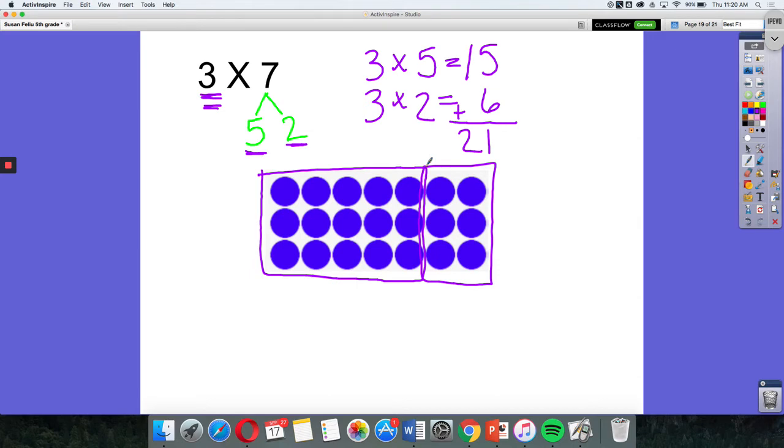So one way we can write it is we could say 3 times (5 plus 2). Or, we could think about it just as we did up here, (3 times 5) plus (3 times 2).